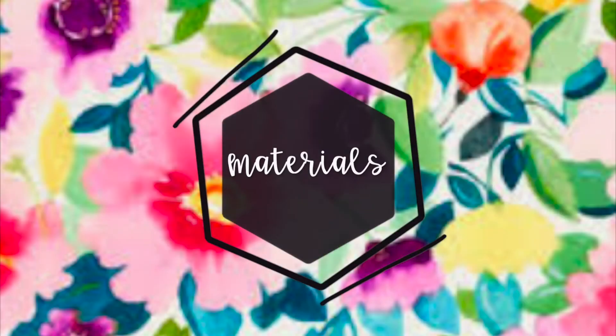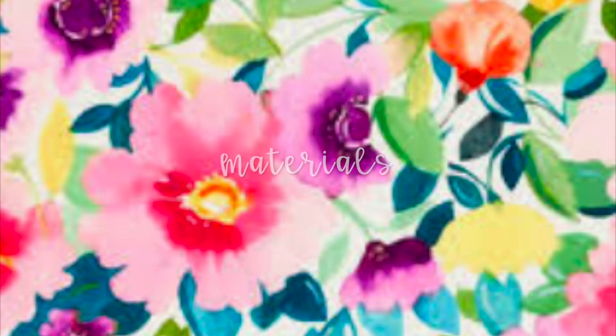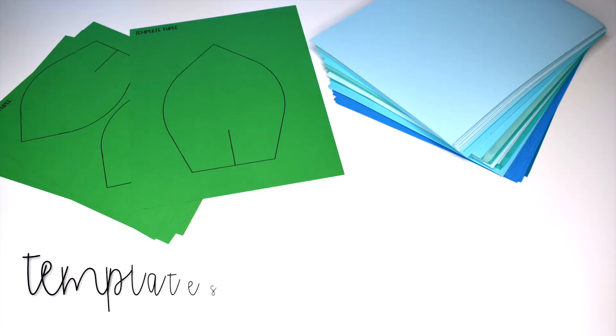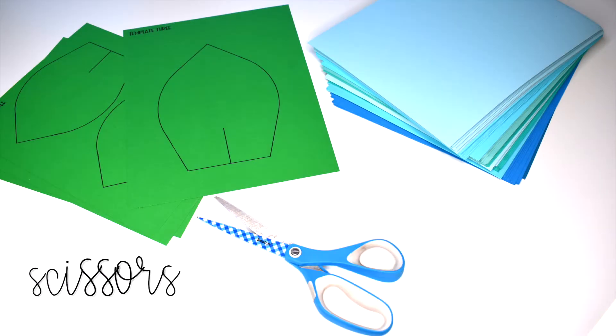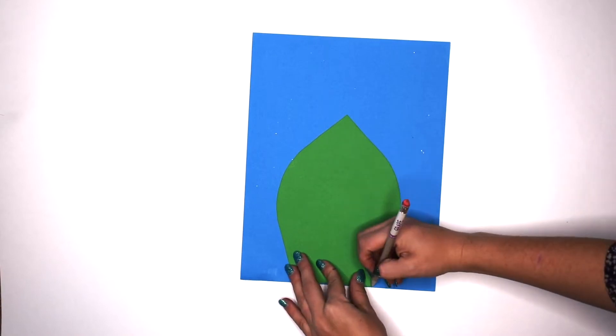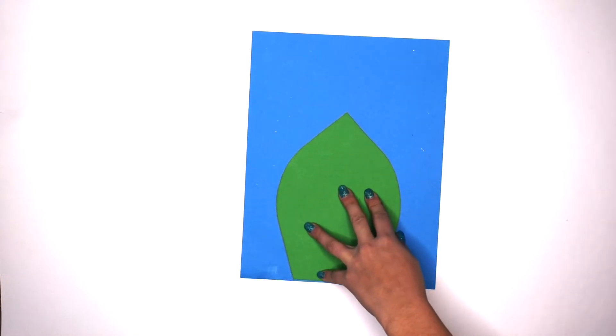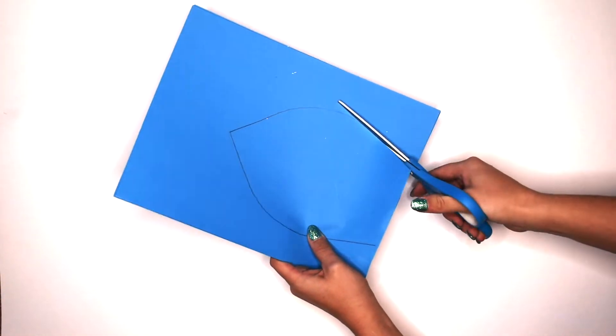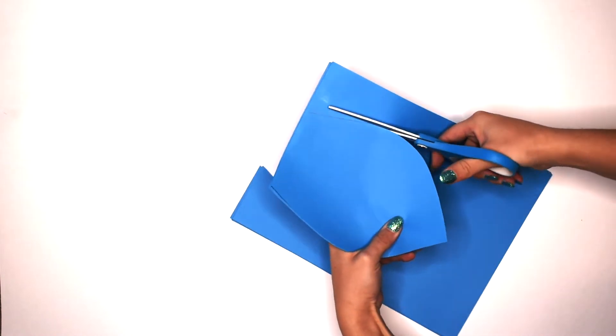The first step to making a paper flower is to trace out your templates. You're gonna need six petals for each layer. Our flower today is going to have three layers, so we're gonna trace our templates and then cut through three pieces of paper at a time to simplify our efforts.